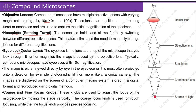The eyepiece or ocular lens is at the top of the microscope; it further magnifies the image produced by the objective lens. Typically, compound microscopes have eyepieces with 10x magnification. The image is either viewed directly through the eyepiece or projected onto a detector such as photographic film or a digital camera. Images are displayed on a computer screen, stored in digital format, and reproduced using digital methods.